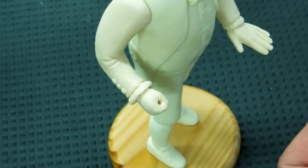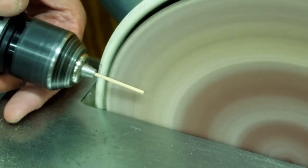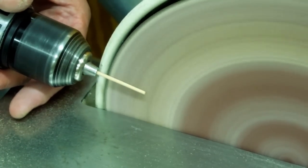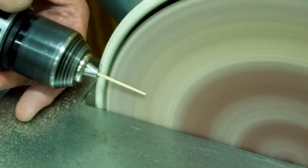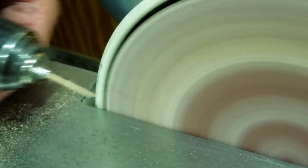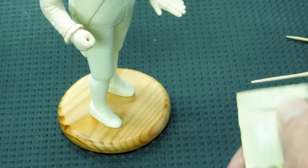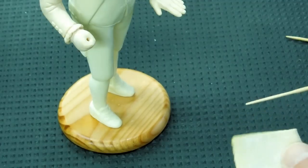Now for the other end. Chuck that up in the drill. I tapered that by running it against the disc sander while I was spinning it in the drill. Now I'm just going to smooth up this end.